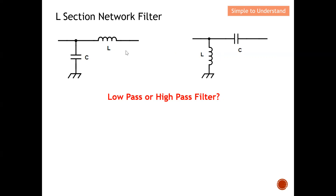The configuration with a series L and a shunt C is a low pass filter — I'm going to explain why. The configuration with a series C and a shunt L is a high pass filter.